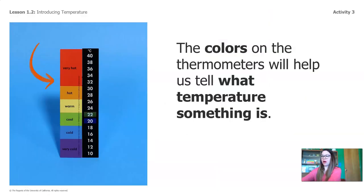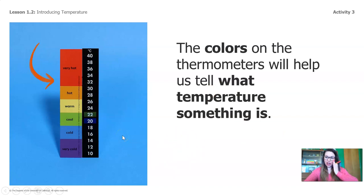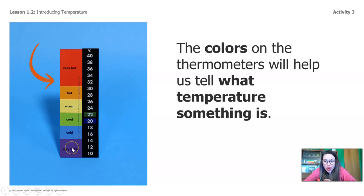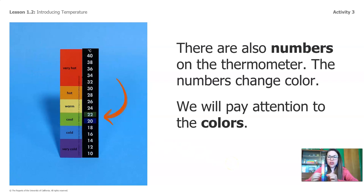Today we are going to be using a thermometer that looks like this one in the picture. The colors on the thermometer will help tell us what temperature something is. I'm going to use my mouse to point to the different colors — let's read them together. At the top of the thermometer it says very hot. The orange says hot. The yellow says warm. The green says cool. The blue says cold. And the purple all the way down at the bottom says very cold. So we're going from very hot all the way down to very cold. There are also numbers on the thermometer that change color and will tell us what type of temperature it is.